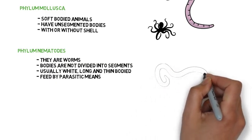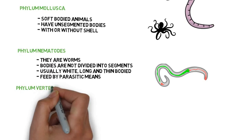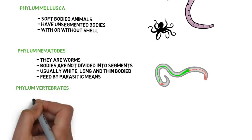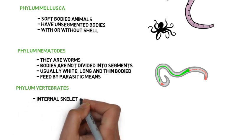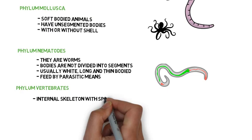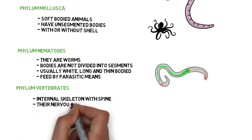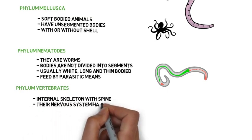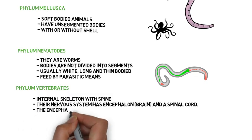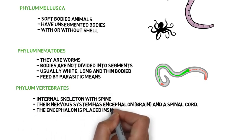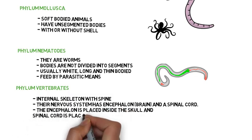Phylum Vertebrates. They have an internal skeleton with a spine. Their nervous system has an encephalon, or brain, and a spinal cord. The encephalon is placed inside the skull, and the spinal cord is placed inside the spine.